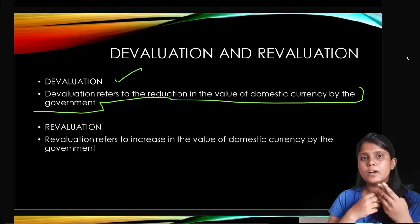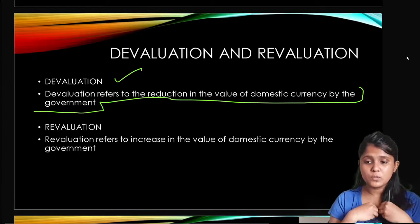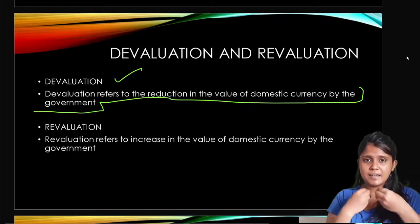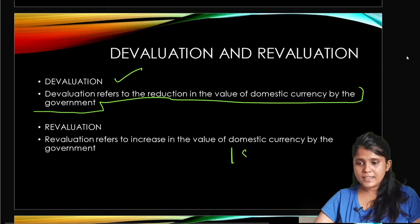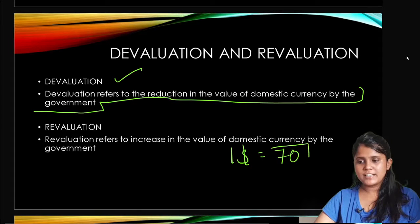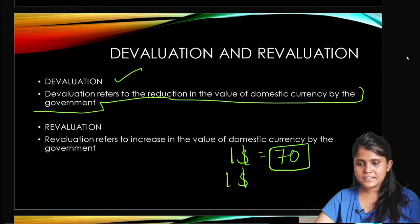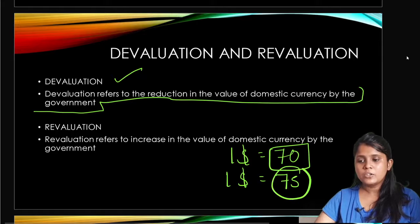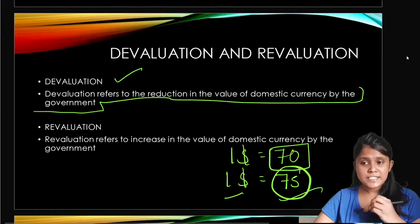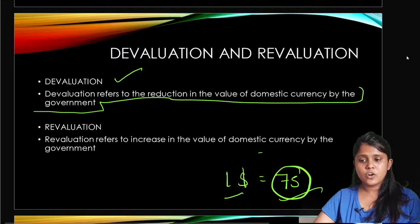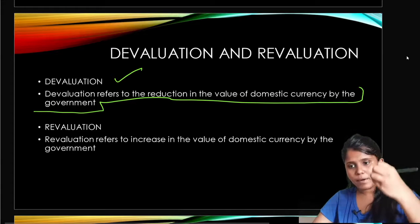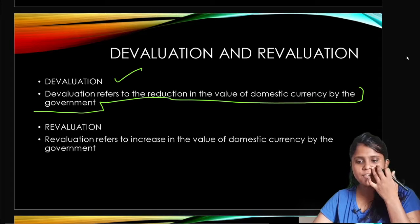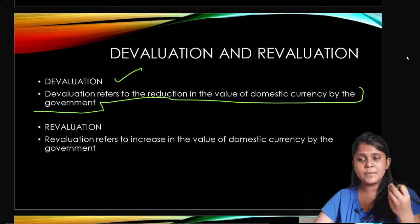Why does the government reduce the value of its currency? If the currency value is reduced, people will export more. For example, if 1 dollar was equal to 74 rupees before and now the currency is devalued so 1 dollar equals 75 rupees, foreigners can buy more Indian goods with the same dollar, boosting exports. That is why the government does devaluation — to increase exports. Revaluation is the opposite: it refers to an increase in the value of domestic currency by the government.